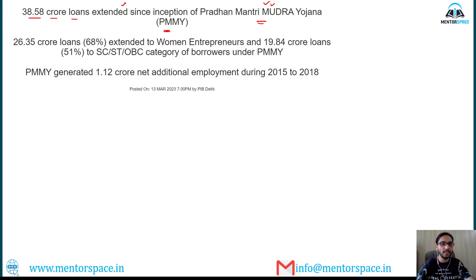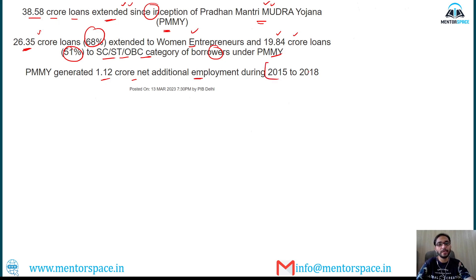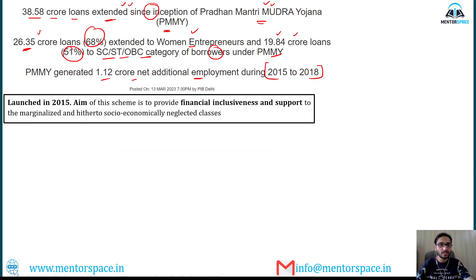Under Pradhan Mantri Mudra Yojana, 38.58 crore loans have been extended since the launch of the scheme. Of these, 26.35 crore loans — that is 68% — have been extended to women entrepreneurs, and 19.84 crore loans — 51% — have been extended to SC, ST, and OBC category borrowers. Additionally, this scheme has generated 1.12 crore net additional employment during 2015-2018, that is over three years.